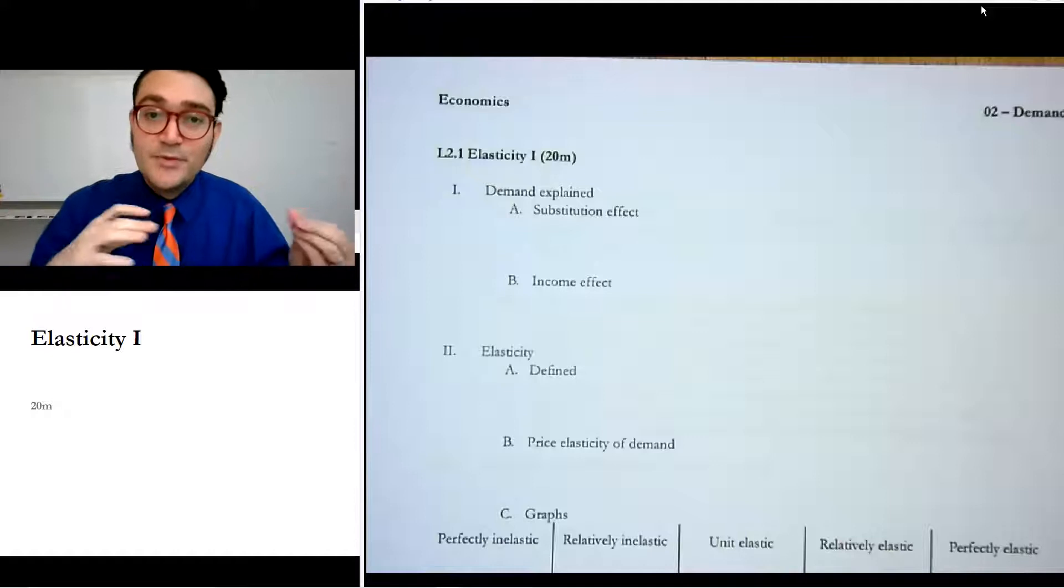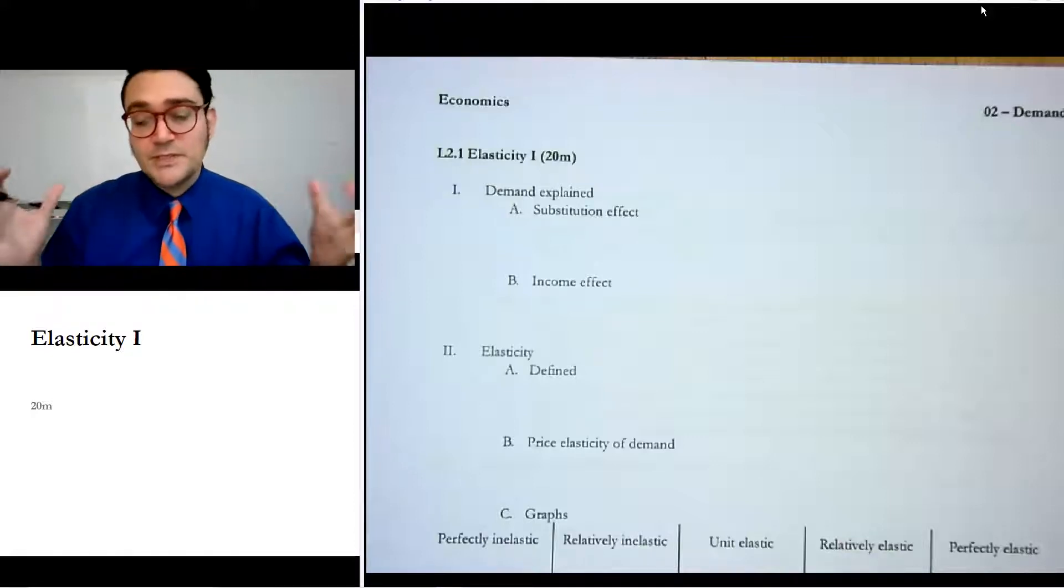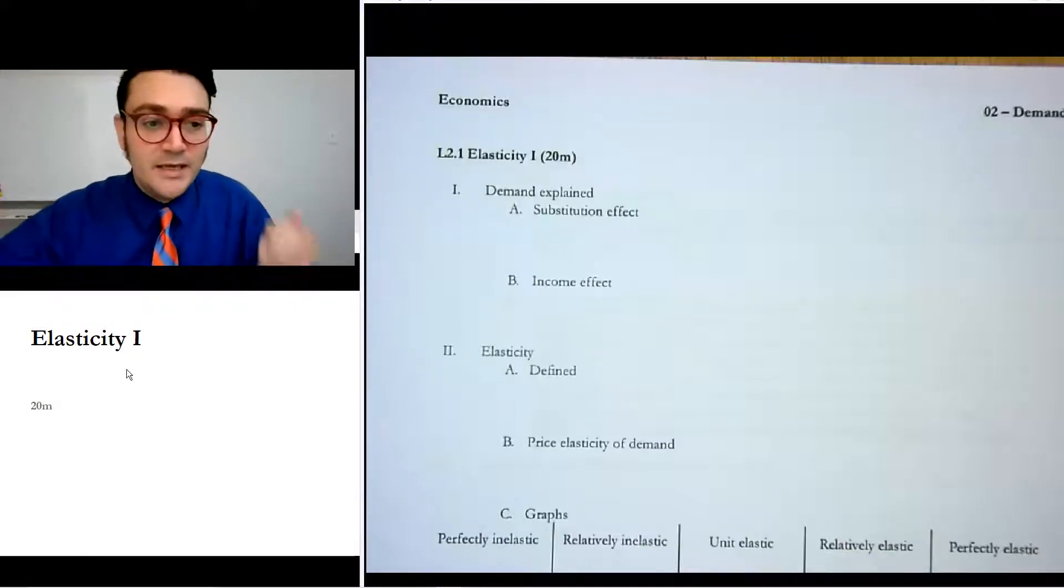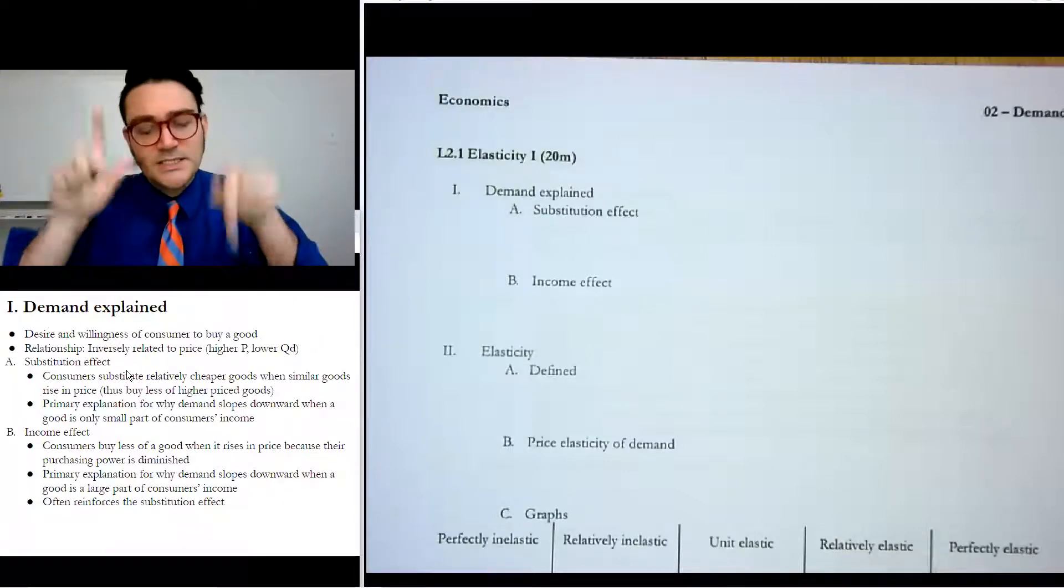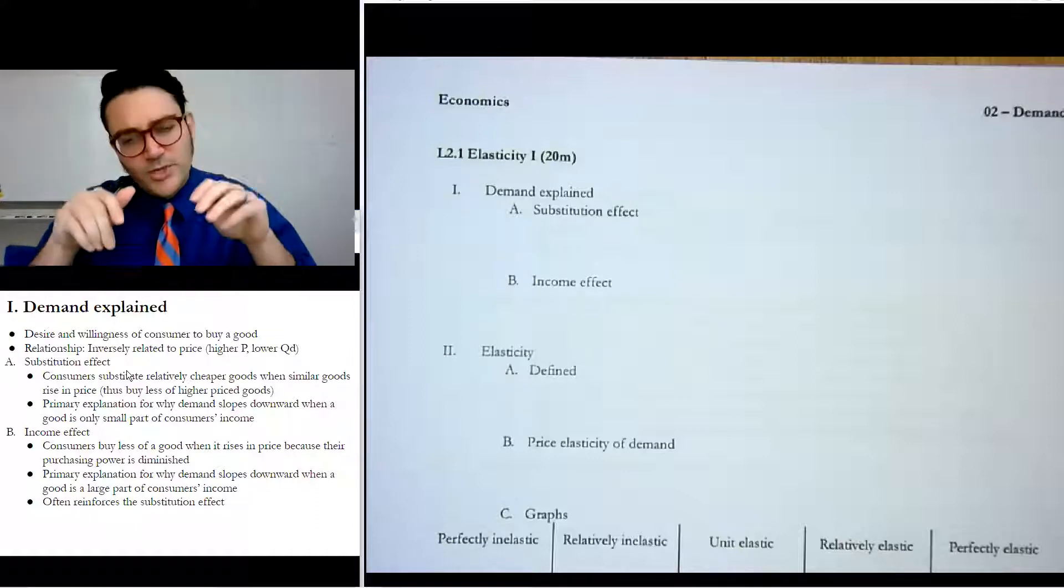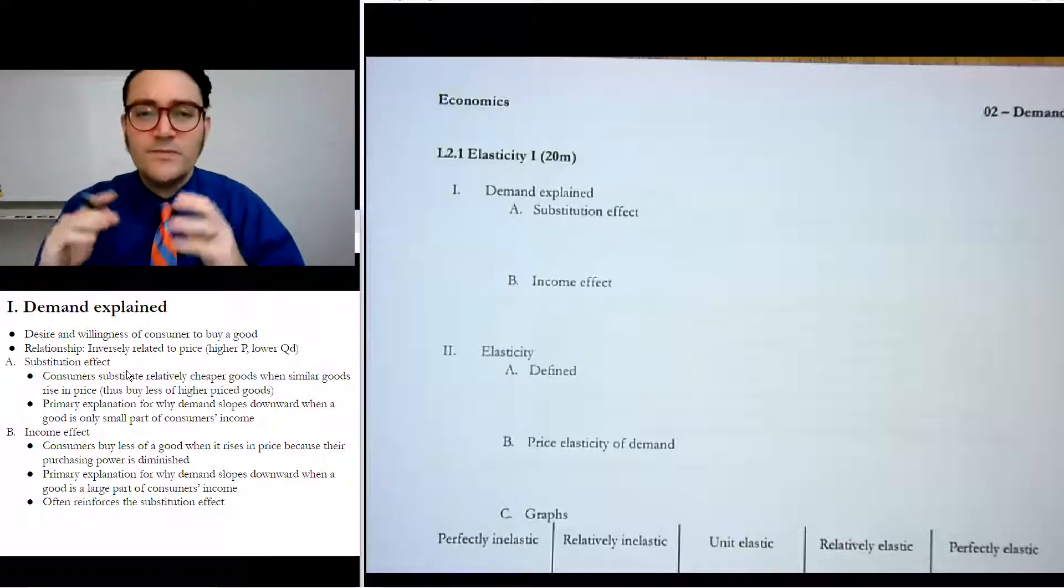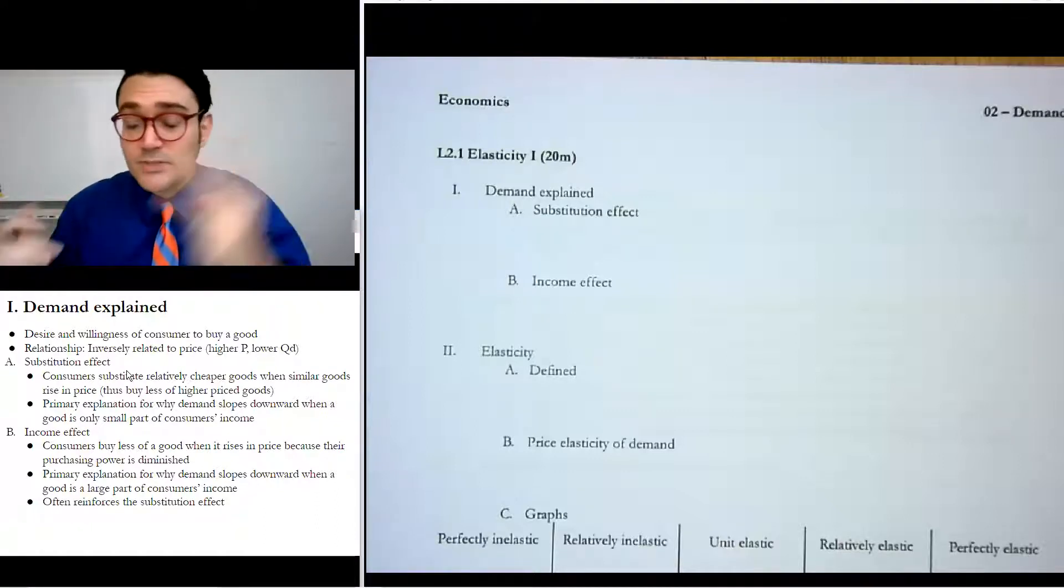But demand, if we remember from last unit, was the idea of consumers' willingness and ability to pay. And I said that you have an inverse relationship between quantity demanded and price. And so there's this typically downward sloping demand curve. But what I didn't say was why.